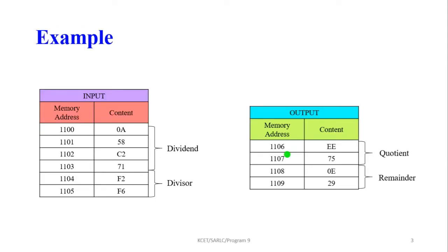In this example, memory location 1100 contains the value 0A, 1101 contains 58, 1102 contains C2, and 1103 contains 71 — this is the 32-bit dividend. The divisor is 16-bit: memory location 1104 contains F2 and 1105 contains F6.